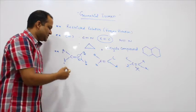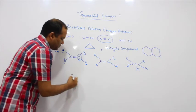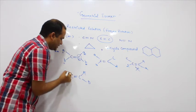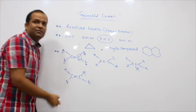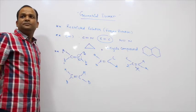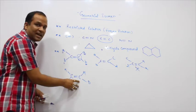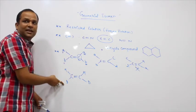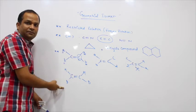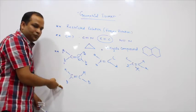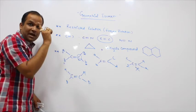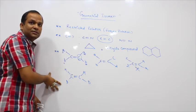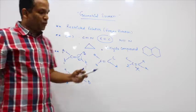Let us take a simple example. Suppose I have a carbon-carbon double bond, and on one carbon I place hydrogen, and on the other I place deuterium. This will definitely show geometrical isomerism, because one carbon has hydrogen and deuterium, and the other carbon also has hydrogen and deuterium — two different substituents on both carbons.